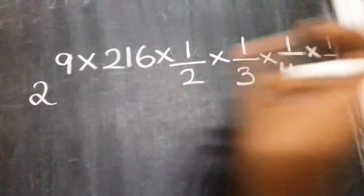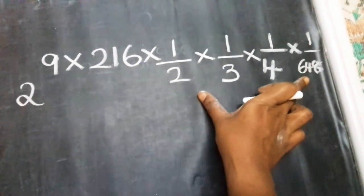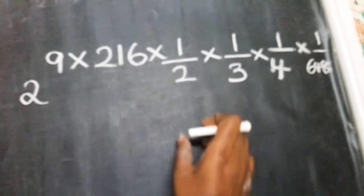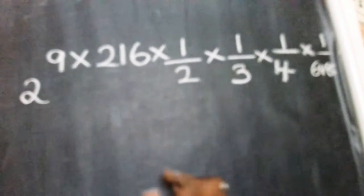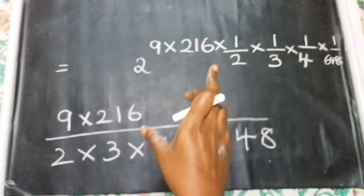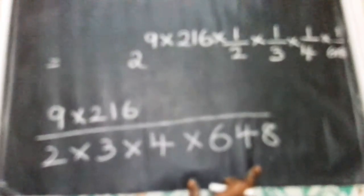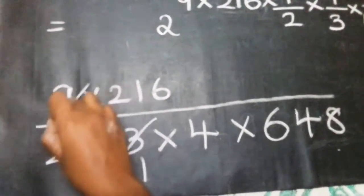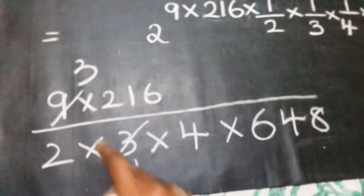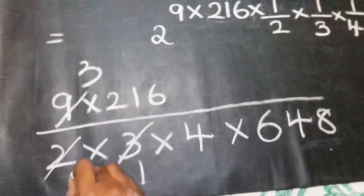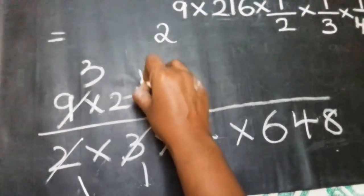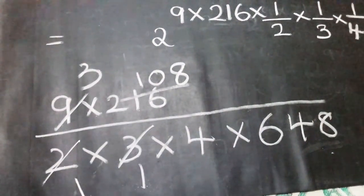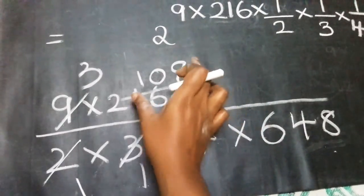So for these numbers, the power gets the denominator values 2, 3, 4, and 648. We simplify the power: the numerator is 9 × 216, and the denominator is 2 × 3 × 4 × 648. We then split and simplify the numbers. 2 into 2 is 4, and we cancel step by step.